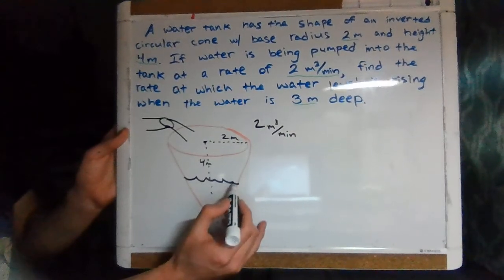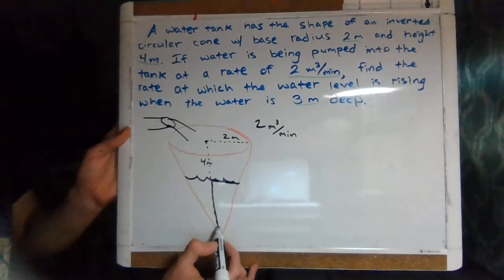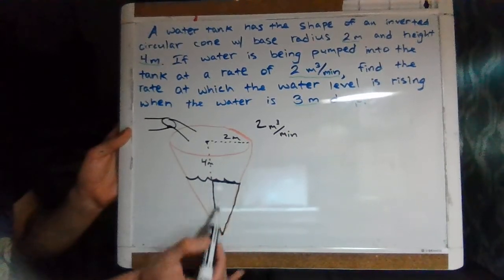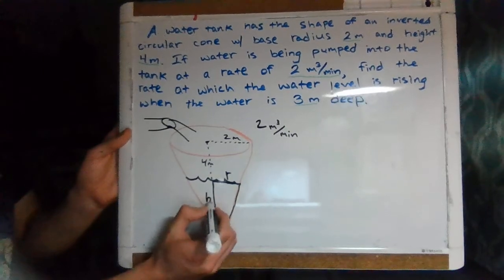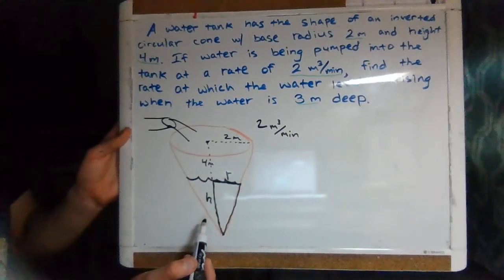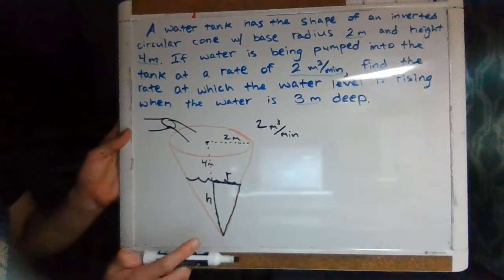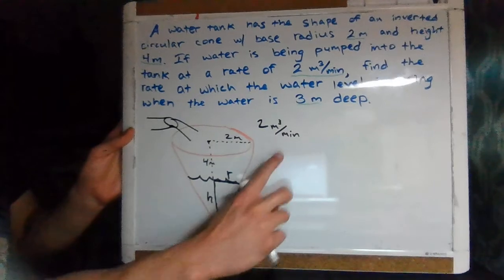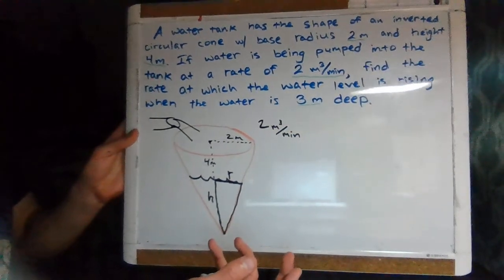As the water level rises inside the inverted cone, we can draw a smaller triangle representing the water. The radius of the water cone and the height of the water are both changing. These variables — the radius of the water r and the height of the water h — are what matter when finding the rate of change of the water level. Since we're given a cubic measurement (2 meters cubed per minute), that tells us we'll need to use the volume equation of a circular cone.